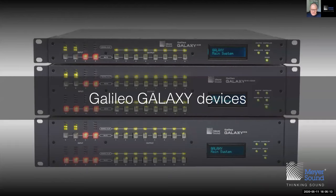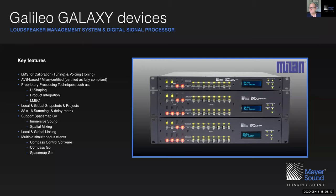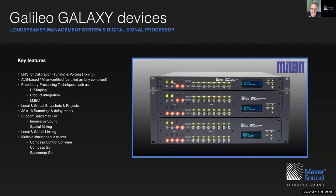Let's look at those Galileo Galaxy devices first. This is the device we use for loudspeaker management and digital signal processing. In the past this used to be Galisto, then the original Galileo, but this is the third generation. We use it primarily for calibrating and voicing sound systems. It is AVB-based and Milan-certified — we'll do an entire focus week on AVB and Milan in the foreseeable future. It features proprietary processing techniques such as U-shaping, product integration, and LMBC. With the Compass control software, we can manage snapshots locally on each device individually as well as globally. It has a matrix of 32 inputs and 16 outputs, which is the focus of today's webinar.